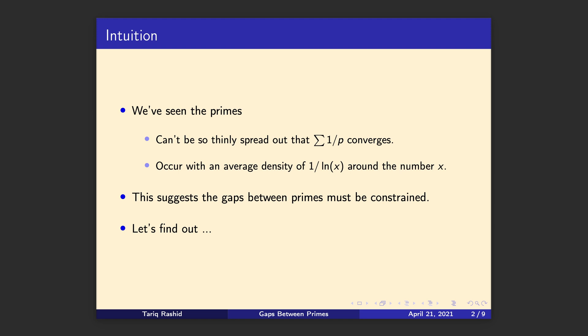The prime number theorem is actually proven now so we can say with much more confidence that the density of primes is approximately 1 over log x around the number x. So with these constraints that they can't be so thinly spread out and there is a finite density of primes it suggests that the gaps between primes must be constrained in some sense. Let's find out, let's dive in.